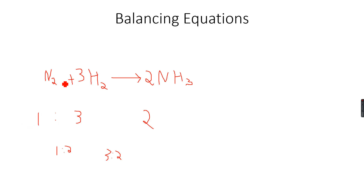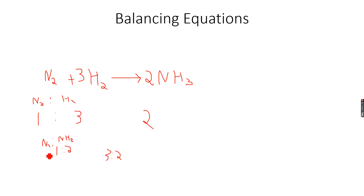N2 to H2 is 1:3, meaning each mole of nitrogen reacts with 3 moles of hydrogen. The ratio between nitrogen and ammonia is 1:2, meaning each mole of nitrogen produces 2 moles of ammonia. The ratio between H2 and NH3 is 3:2, meaning 3 moles of hydrogen form 2 moles of ammonia. These are all the stoichiometric ratios.